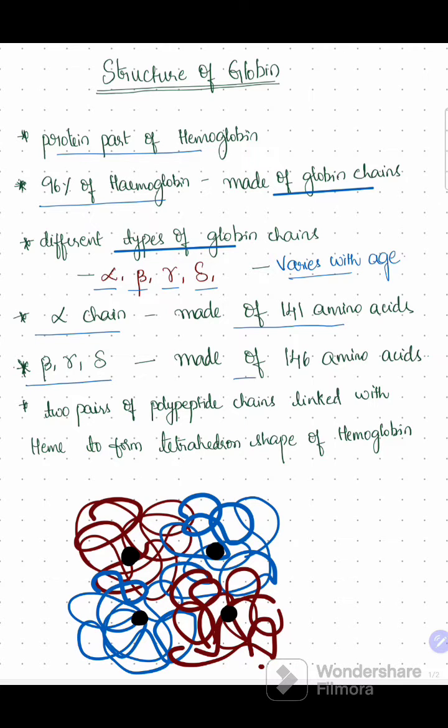Beta, gamma, and delta are made of 146 amino acids. In hemoglobin, two pairs of polypeptide chains are linked with heme to form the tetrahedron shape of hemoglobin.